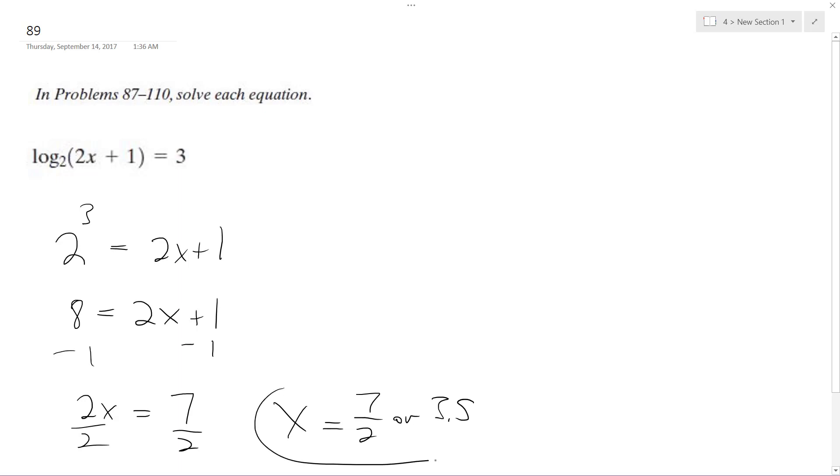Let's check this out real quick. Log base 2 of 2 times 7 over 2 plus 1. This is log base 2, it's equal to 3. So log base 2 of 7 plus 1, which is the same thing as just 8. It's equal to 3.